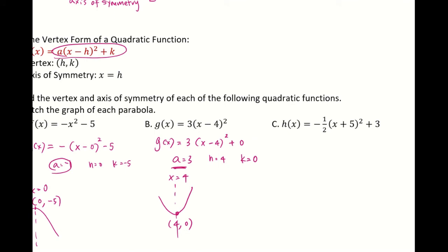For c, this function is also in the vertex form. You can see that a is negative one half, and your h here is the opposite of what you see, which is negative 5, and k is 3.